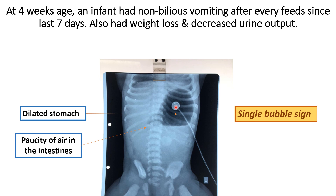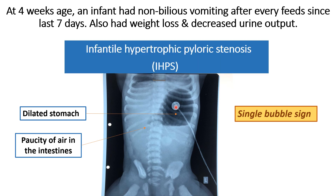The diagnosis for this X-ray is infantile hypertrophic pyloric stenosis, and the name of this radiological sign is the single bubble sign.